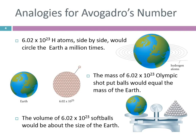Olympic shot put balls are about 10 pounds. So that's a lot. And if we took the volume of Avogadro's number of softballs, that would be about the size of the Earth.